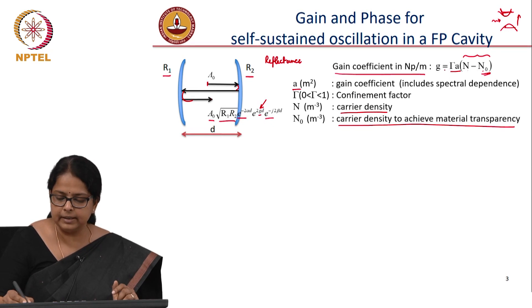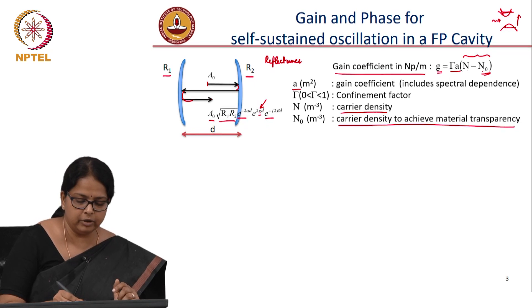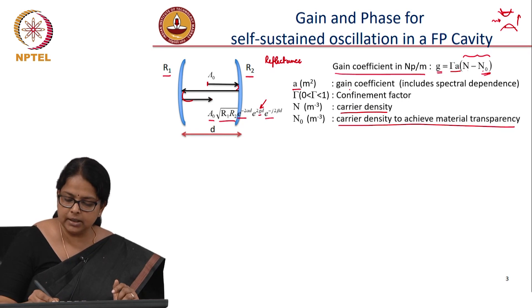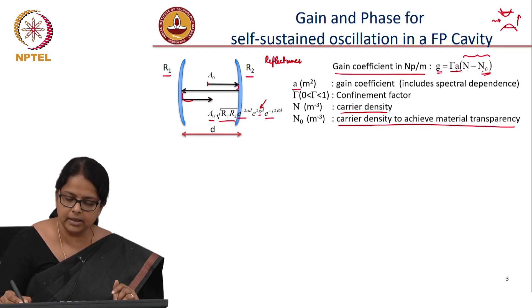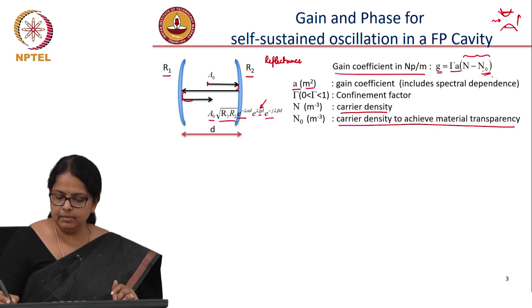This gain coefficient is neper per meter, in the form e^g where I am going to use this g in the exponent. This proportionality constant is also called as a gain coefficient because your gain is proportional to N minus N naught and the constant is your gain coefficient. But this is in meter square.